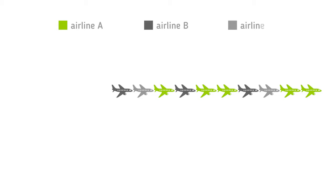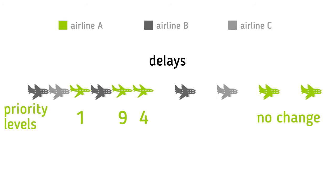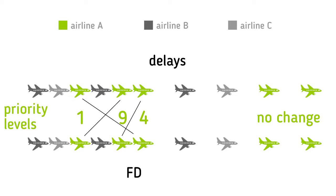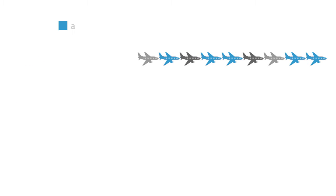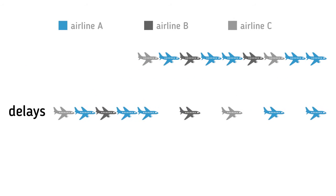FDA lets airspace users decide how delays should be absorbed by their affected flights. The system apportions those delays according to the priorities of the airline. With SFP, airspace users can prioritise their most important flights and allow less important flights to fly later.